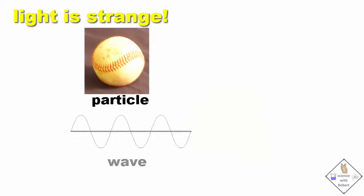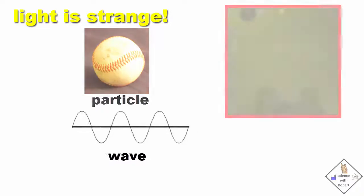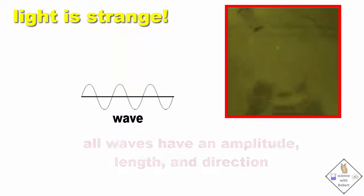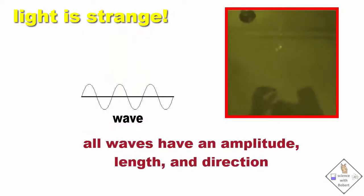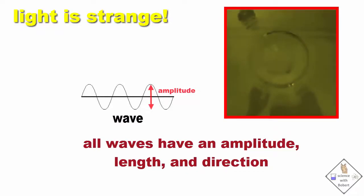Light is strange. It can act like a particle or a wave. In order to build a cell phone signal blocker, it will be most beneficial to focus on the wave properties of light. As we can see with water dripping into a bucket of water, the water waves created by the drops have an amplitude, a length, and a direction. The length of a wave is referred to as its wavelength.